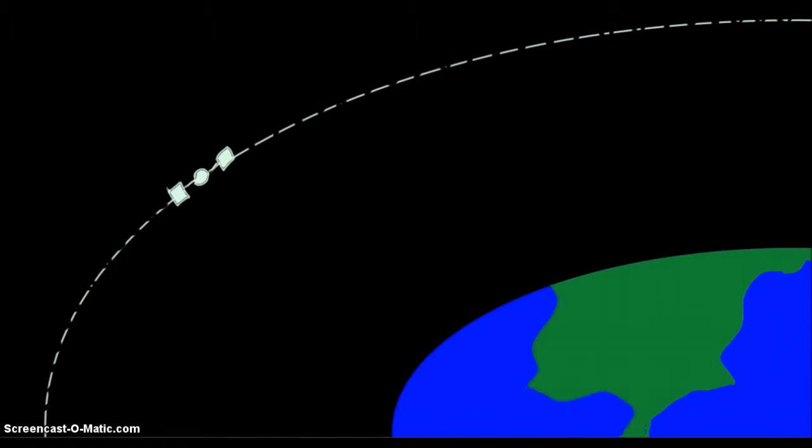Next up, ephemeris errors. When a satellite strays from its orbit, it has what is known as an ephemeris error, or deviation in a satellite's position or prescribed orbit.